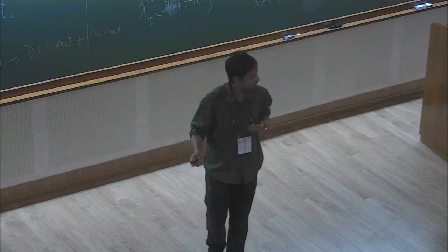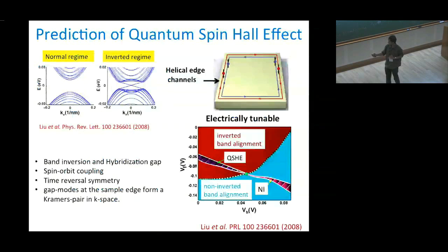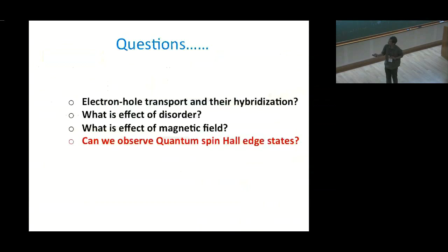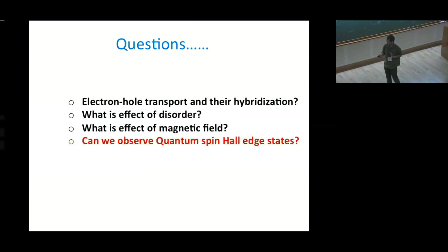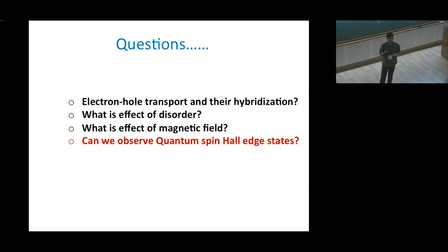One more thing: they showed that if you apply an electric field, you can also tune the band structure. With this, we can ask several questions. First, can we observe electron-hole transport and their hybridization? Second, what is the effect of disorder? Because the gap size is very small — 5 to 10 meV, which in terms of temperature is only 50 to 100 Kelvin — so you have to go to low temperature and the material quality has to be ultra clean.